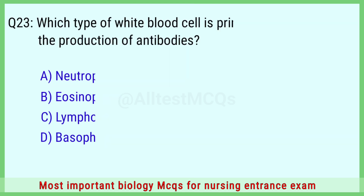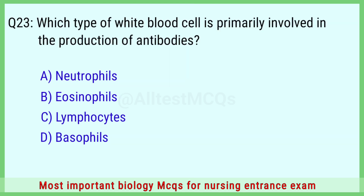Question number 23: Which type of white blood cell is primarily involved in the production of antibodies? The correct answer is option C: lymphocytes.